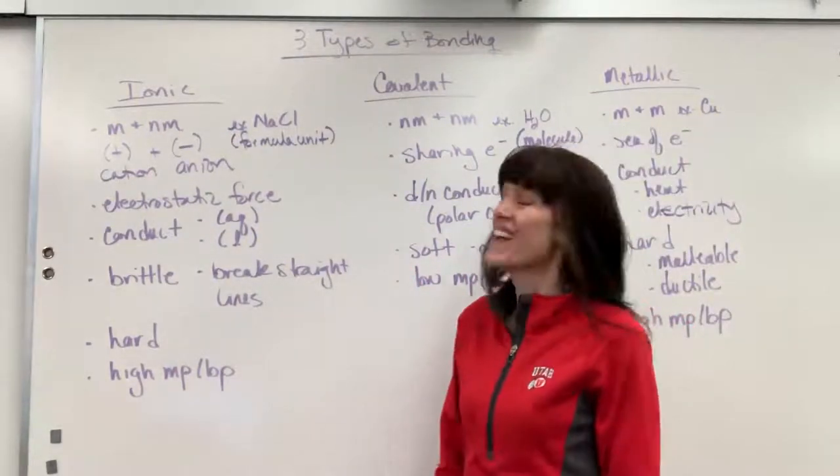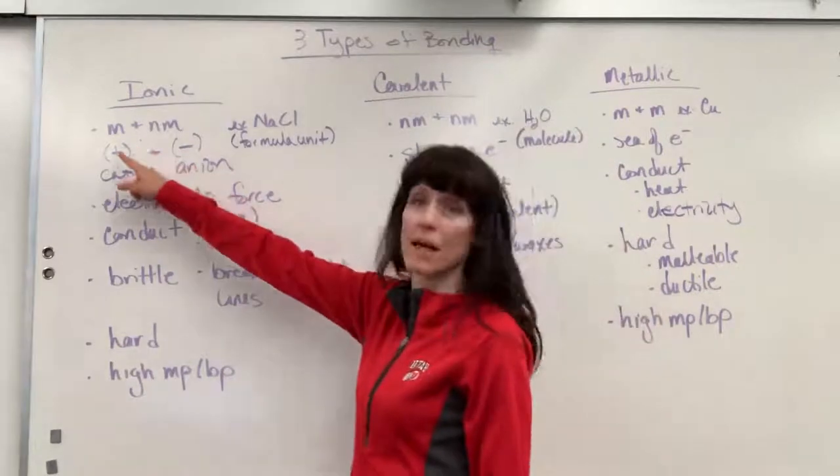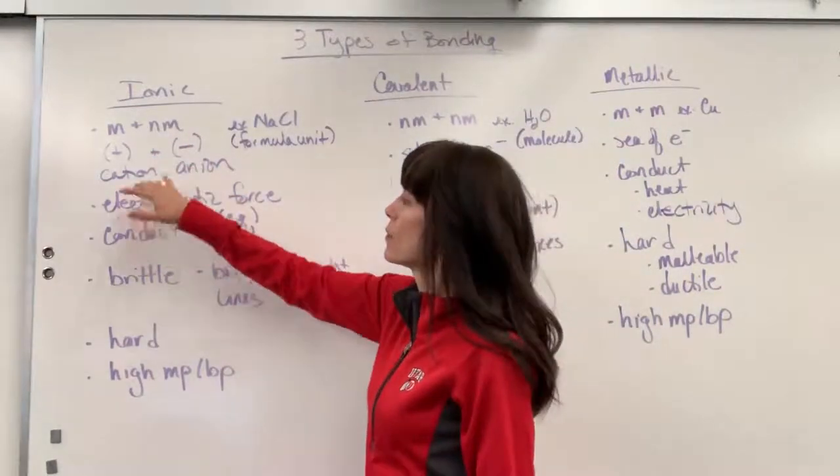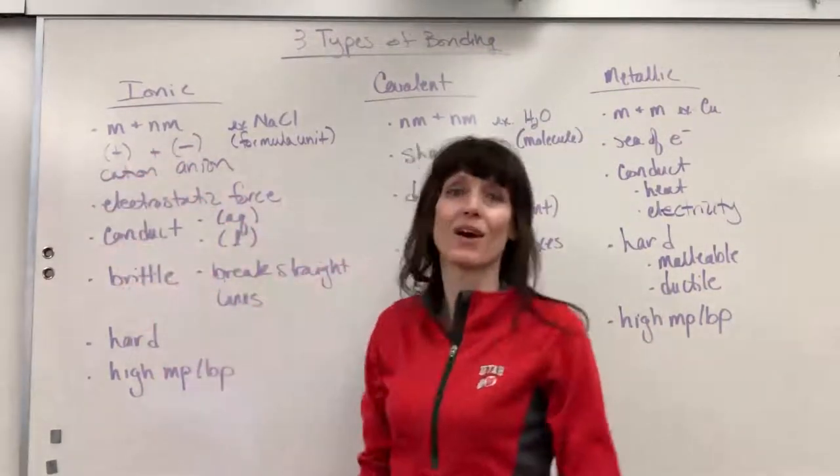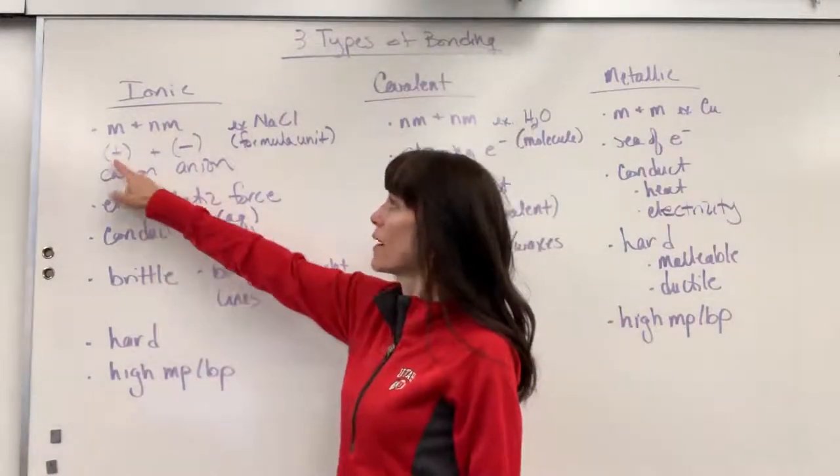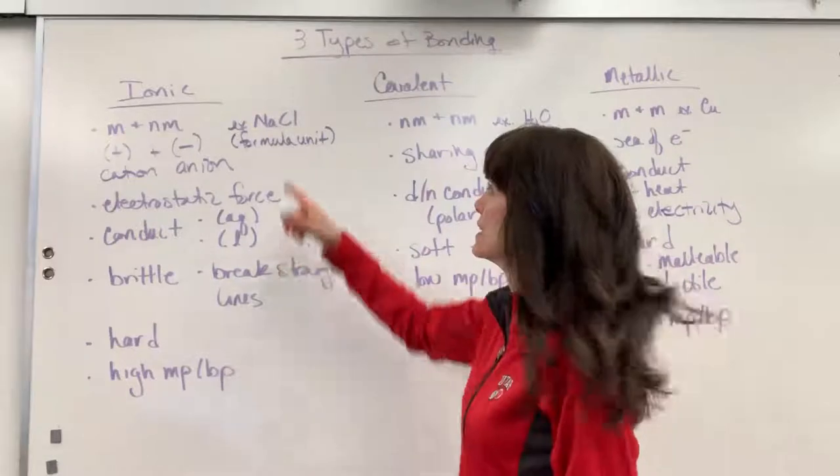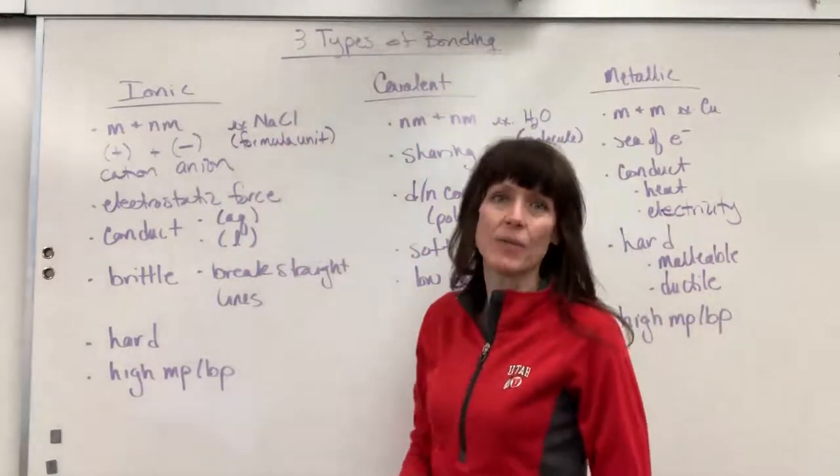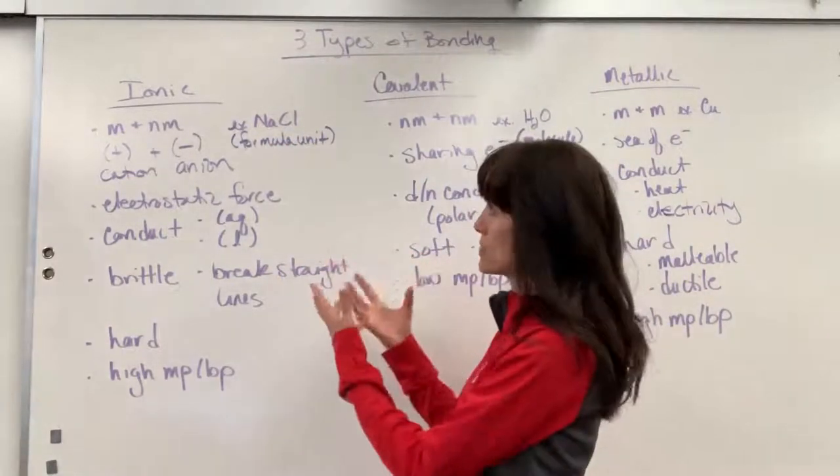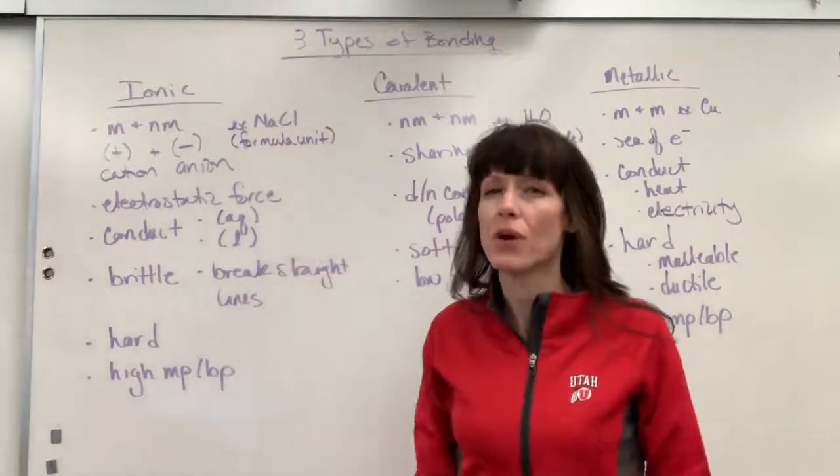Let's start with ionic. So an ionic bond is between a metal and a non-metal, and what's key to this is that they are ions. You're going to have the positive cation and the negative anion. An example of this is sodium chloride. Now this compound, if we're being really specific for ionic compounds, is called a formula unit.